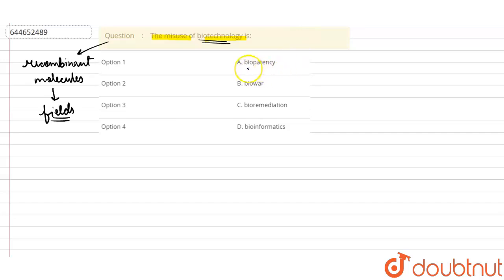Let's start with option A: biopatency. Biopatency is associated with patent filing of any biological product. So it is not the misuse—it's the utilization of biotechnology. This can't be the correct option.